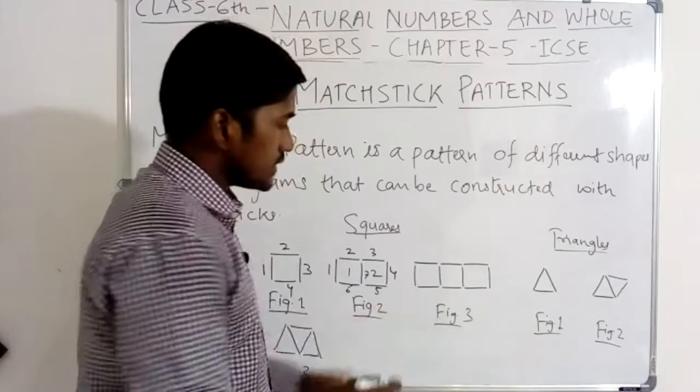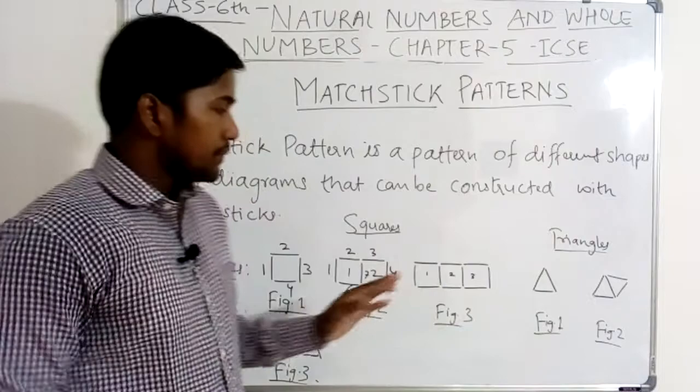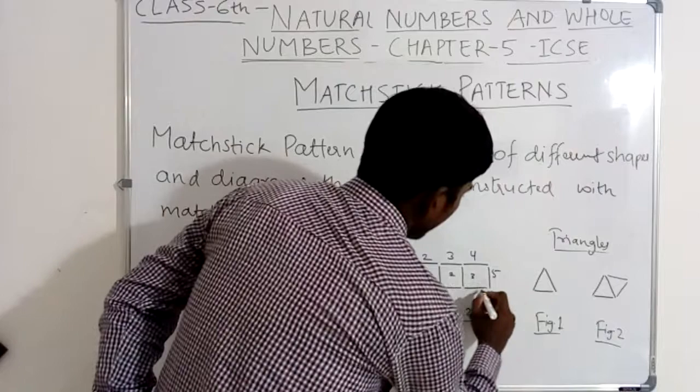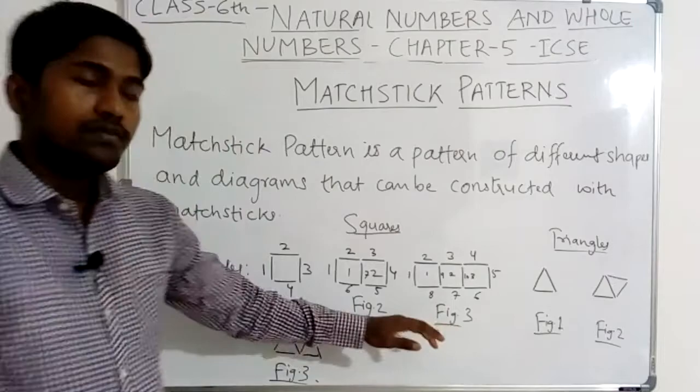In figure 3, how many mastic are used? One, two, three, four, five, six, seven, eight, nine, ten. Ten numbers of mastic are used in figure number 3.